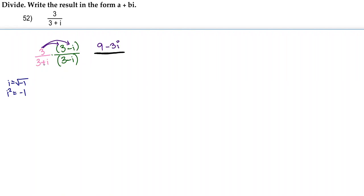Because here we have a binomial being multiplied to another binomial, we would FOIL. But because these are also conjugates of each other, we don't need to do the O or the I because those will end up canceling out. So, we're just going to multiply the first two terms and the last two terms. So, the first two terms are 3 and 3, so 3 times 3 is 9.